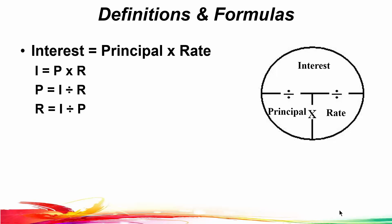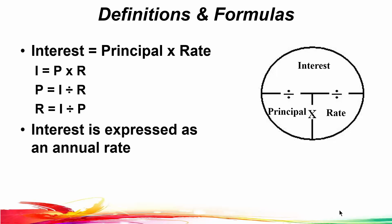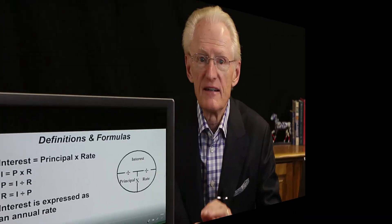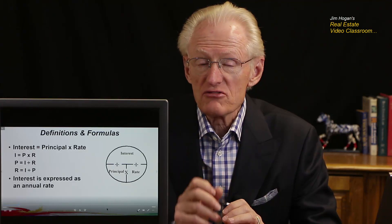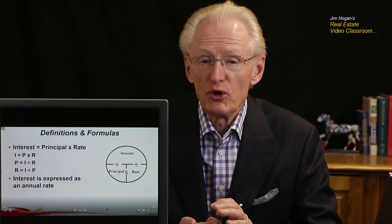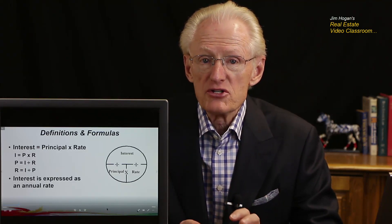Using the memory circle to find the principal, we cover that up and it tells us to divide the interest by the rate, so P is equal to I divided by R. And if we're looking for the rate, we cover that up and it tells us to divide the interest by the principal, so the rate is equal to I divided by P. Please realize that interest is always expressed as an annual rate. Keep in mind the interest — the small dollars — goes on top, versus the principal or loan amount on the bottom times the rate.